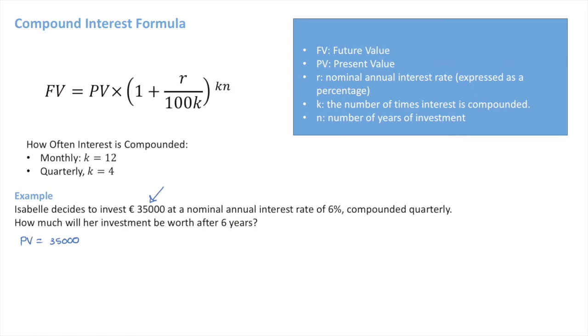We're also told that the nominal annual interest rate is 6%. So we can already say that R is equal to 6. We're also told that it's compounded quarterly. This means that K equals 4.